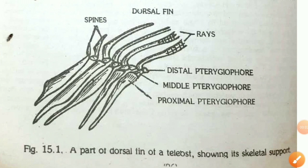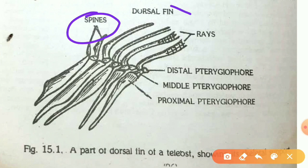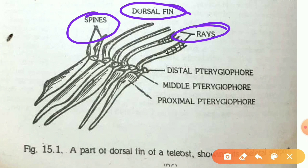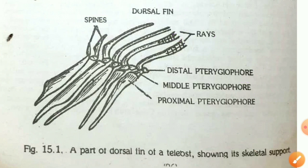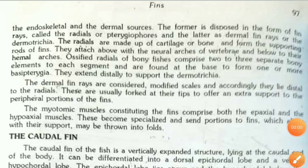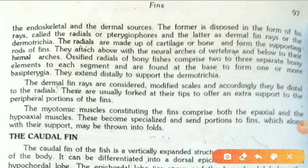The skeleton supporting the fins arises from two different sources. The first source is endoskeletal, and the second is dermal. The endoskeletal source is disposed in the form of fin rays called radials or pterygophores, while the dermal source forms dermal fin rays, also known as dermotriquea.